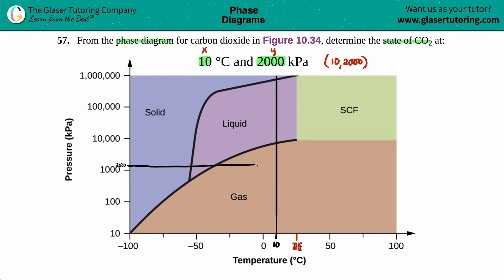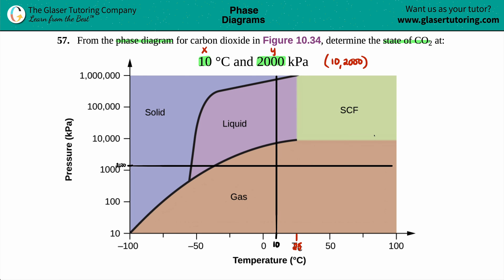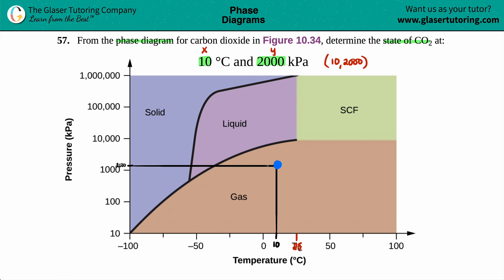Let's draw a straight line. And where those two lines intersect — which is here — X marks the spot. Whatever color region you're in, that's what the state of CO2 is going to be. And we are in the gas region.